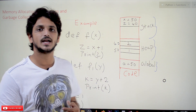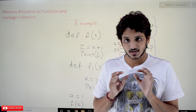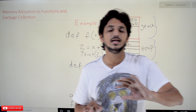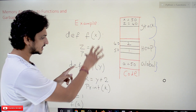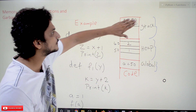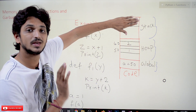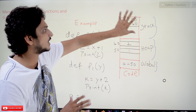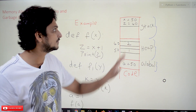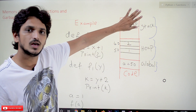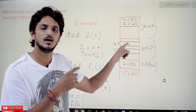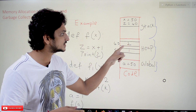The important point to understand is that after completion of the function, the space allocated for that function will be deleted. The function execution is complete, and these variables — x and z — are removed. The stack space is empty; no function is in the stack. But the object is still present in the heap, with no variable referencing it.